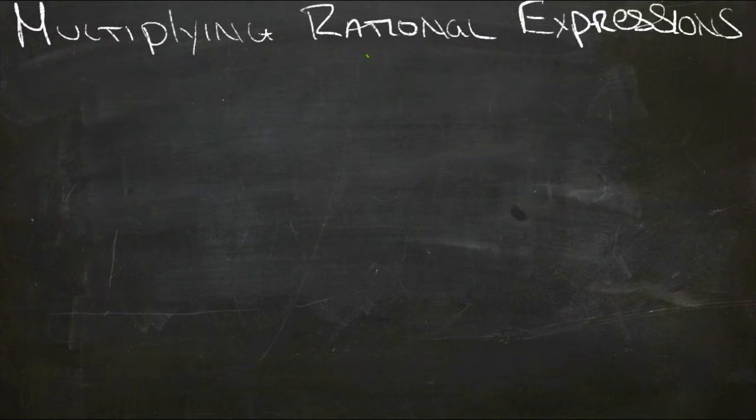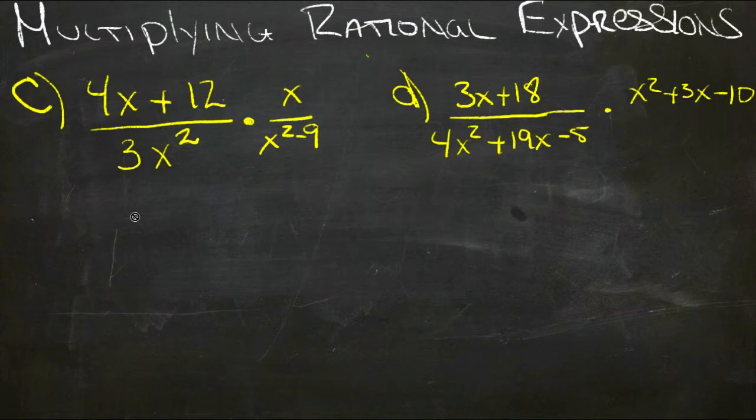So then for example c and d, for example c, we have 4x plus 12 over 3x squared times x over x squared minus 9. Now I'm going to factor these first to see what things are common a little more easily. So we'll have 4 times x plus 3 on top.